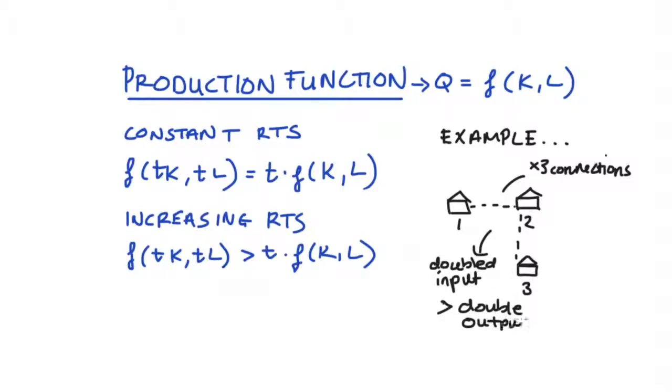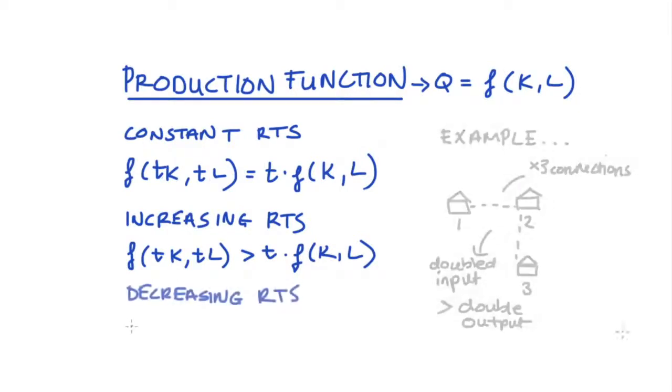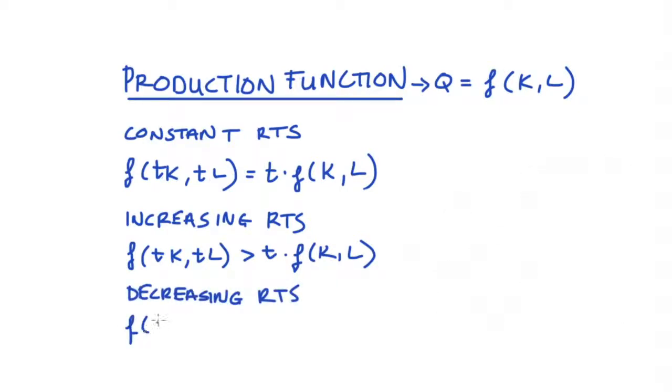Okay, so lastly, let's think about decreasing returns to scale. Decreasing returns to scale occurs when we change all of the inputs to production by some factor (let's call it T again), but the output increases by less than that factor. For my example here, let's just imagine that I had a small hospital that serviced an amount of patients per year. If we doubled all of the inputs to production, say we got a large hospital, we had double the amount of space, double the amount of equipment, double the amount of doctors, nurses, etc.